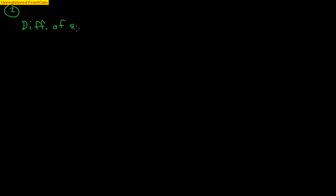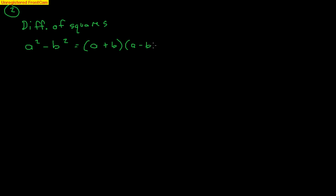The next factoring technique is special factoring. The first one is the difference of squares. Hopefully everybody's seen this before. We have a² minus b². The first thing we need is a difference — it has to be a minus sign — and both values must be perfect squares. When you factor this, you simply get (a + b)(a minus b). If there was a plus sign, it doesn't work — it's only called difference of squares.